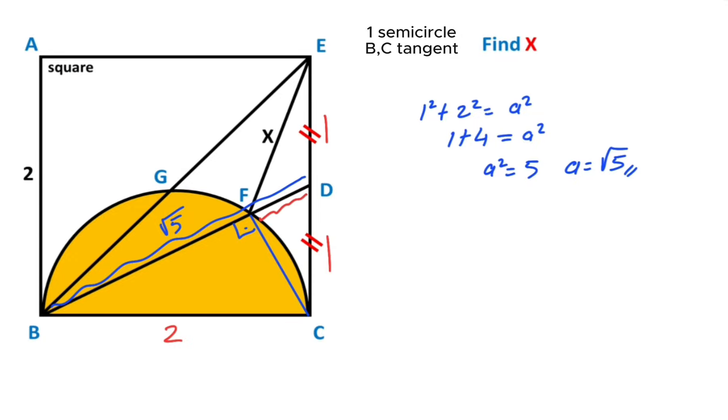Then let's call here b, and here is 90 degrees, right? So for this triangle, if we apply Euclid's theorem, 1² = b × this length, right, this length √5. So b = 1/√5. Okay, that's right here, 1/√5.